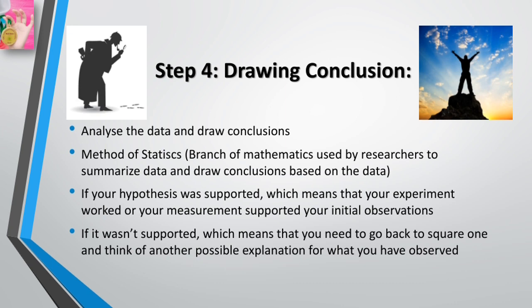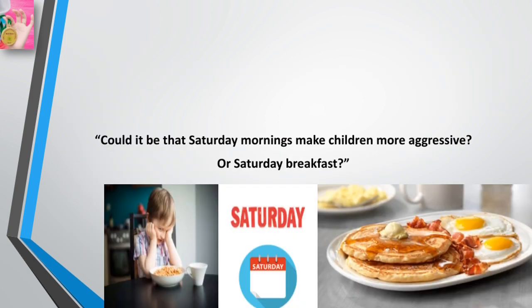Once you know the results of your hypothesis testing, you will find that either your hypothesis was supported — meaning your experiment worked and your measurements supported your initial observation — or it wasn't supported, which means you need to go back to square one and think of another possible explanation. For example, could it be Saturday morning itself that makes children more aggressive, or Saturday breakfast? The result of any hypothesis testing won't be just raw numbers — all data from your testing will be analyzed with statistical methods that help organize and refine the data.